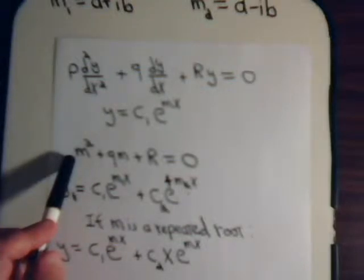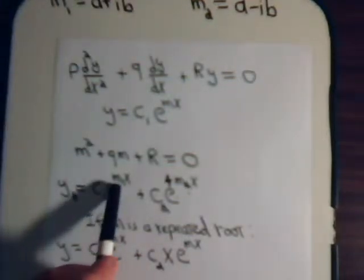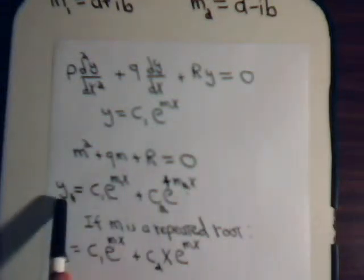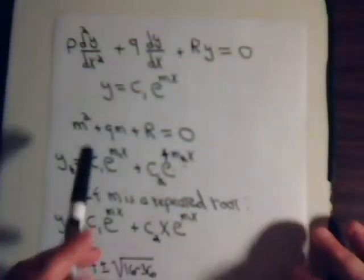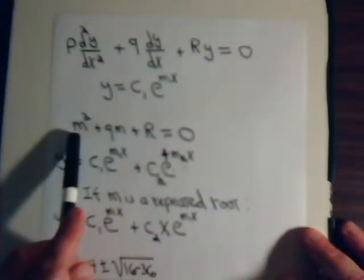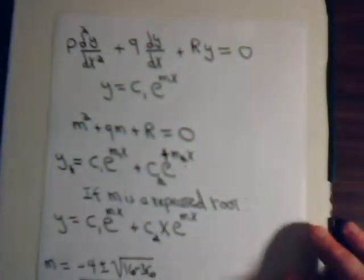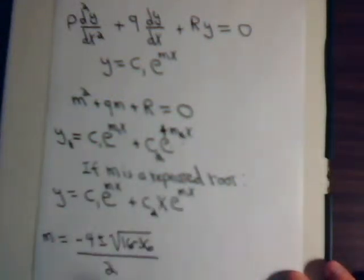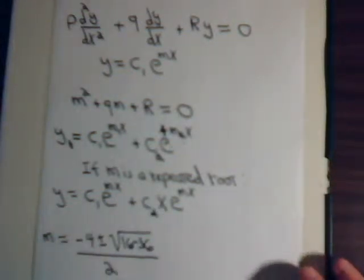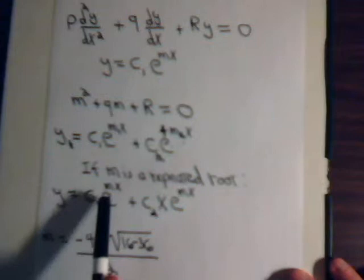We have two values of m, so there are two solutions to the equation: one where y equals e to the m1·x, the other e to the m2·x. Any linear combination of those solutions will also be a solution to the differential equation, as we've demonstrated several times in previous videos. Now, when solving the quadratic equation, if we don't get two different values of m, sometimes we just get a repeated root. What we've shown in the past few videos is that the general solution is e to the mx, but one of the solutions will have this multiplied by an x.